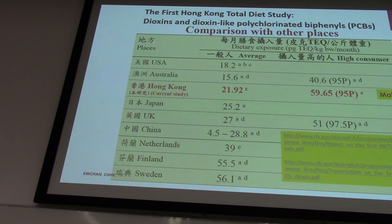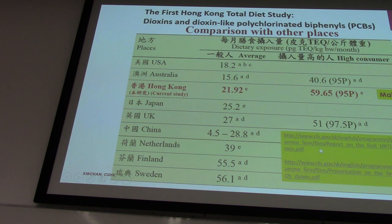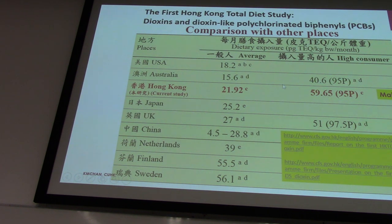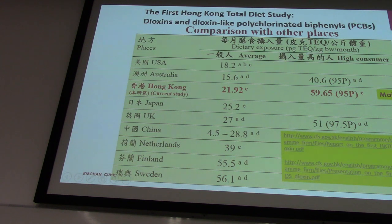I tried to put only one slide for the data we have. From Hong Kong, we have the Centre for Food Safety. We did that study, and their report tells us we are pretty safe. After calculating the different kinds of food and estimating the amount consumed, we calculated around 21.92 picograms per kilogram body weight per month.